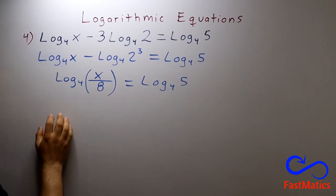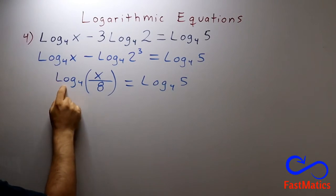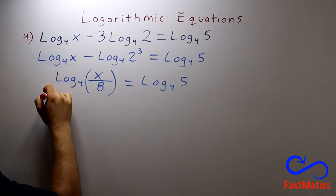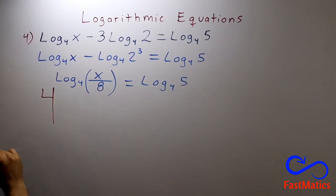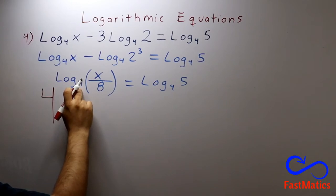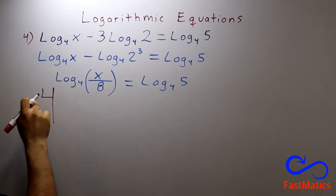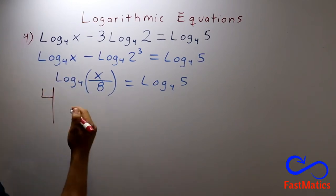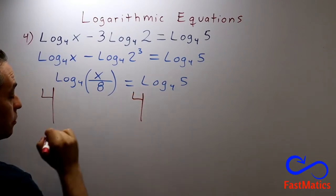How can I eliminate a logarithm base 4? Well, if I put a base 4 raised to the logarithm base 4, it will be eliminated. But if I put a base 4 here, I need to put a base 4 here also.